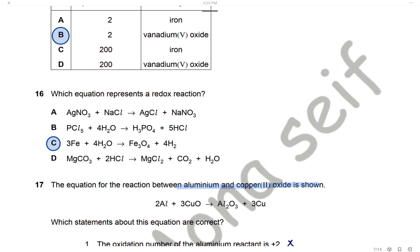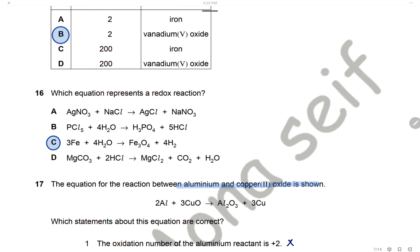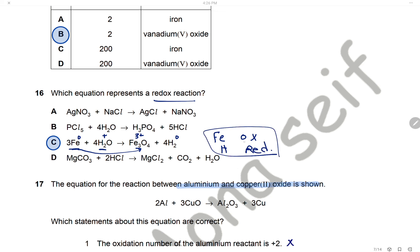Question 16: Which equation shows a redox reaction? In equation C, iron gains oxygen — it is oxidized to iron oxide. The oxidation number of iron goes from 0 to +3, so iron is oxidized. For hydrogen in water, the oxidation state changes from +1 to 0 — the oxidation state decreases, so hydrogen is reduced. Equation C has both oxidation and reduction in the same reaction — it is a redox reaction.